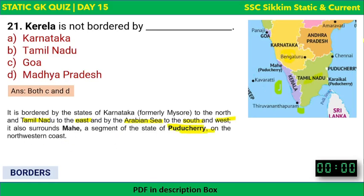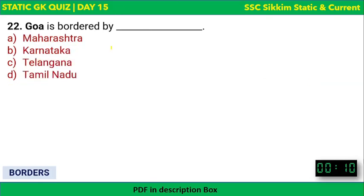Kerala is not touched by Goa or Madhya Pradesh, as Madhya Pradesh is very far away. Karnataka and Tamil Nadu are the only Indian states bordering Kerala. Next, Goa is bordered by which states? The options are Maharashtra, Karnataka, Telangana, or Tamil Nadu.